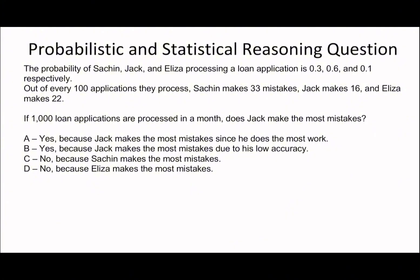Let's go on to the next question. The next question talks about if 1000 loan applications are processed, does Jack make the most mistakes? The probability of Jack, Sachin, and Liza processing is 0.3, 0.6, 0.1. Out of every 100, Sachin makes 33 mistakes, Jack makes 16, Liza makes 22.